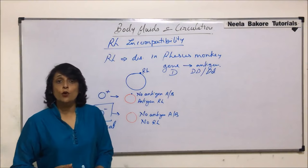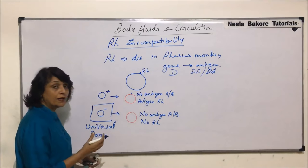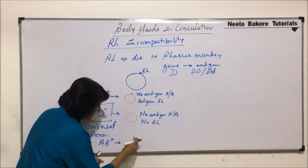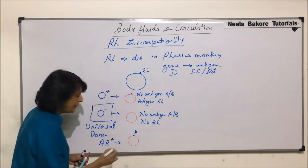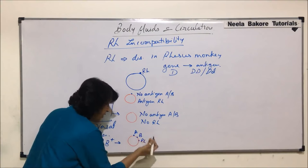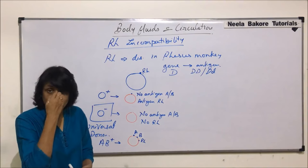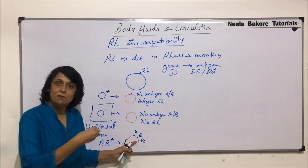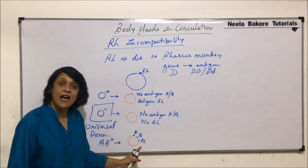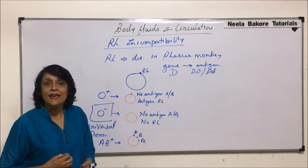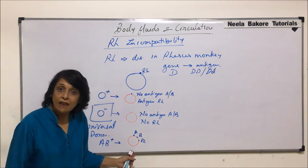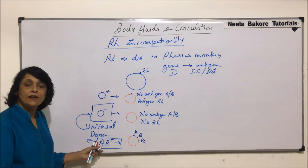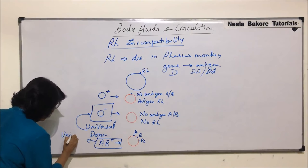The universal recipient would be AB positive. If a person is AB positive, it means that the RBC has antigen A, antigen B, and RH. That means everything coming in becomes its own — what we call the self. If A blood group is given, antigen A is already there; if B blood group is given, antigen B is already there; and if positive blood is coming, RH is already there. So every type of antigen coming in is like self, meaning there would be no reaction. That is why this person can receive blood from any blood type and we call them the universal recipient.